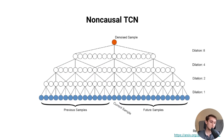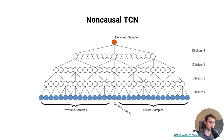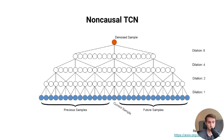Our previous TCN-based approaches were non-causal. As shown in the diagram from previous work, the receptive field considers both future and past samples in computing the current sample, which prohibits real-time operation due to high latency. One option is to simply use causal convolutions, which we adopt, meaning we only consider past samples. However, causality alone is not enough for real-time operation — we still need high efficiency to run enough samples in a block-based manner.